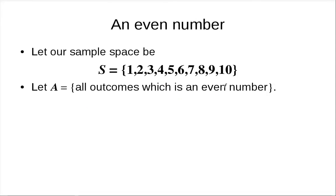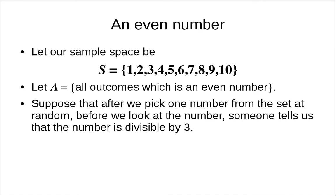Suppose we have the same sample space and let A be the event that you get an even number. Normally the probability of that event is one-half. But before we see the result, someone comes and says: the number you picked is divisible by three. Is this information going to change your belief — is it going to change the probability that you get an even number?